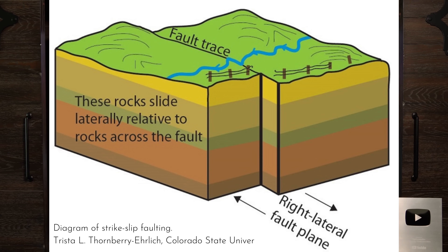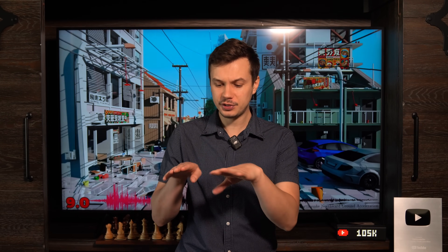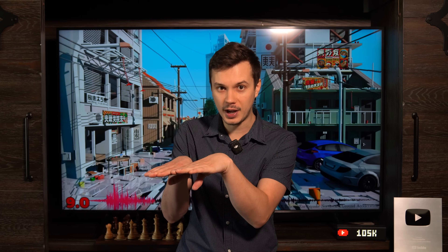So let's quickly break down what an earthquake is. Imagine two huge blocks of the Earth's crust pressed up against each other. These aren't small rocks — we're talking massive sections of our planet. Due to large-scale tectonic forces, these blocks are constantly trying to move past each other. For a strike-slip fault, like the famous San Andreas fault, one block is trying to slide horizontally past the other, sort of like my hands are doing right now.